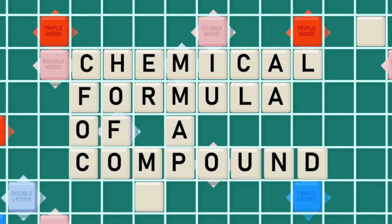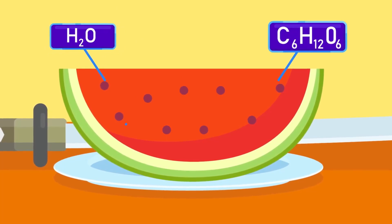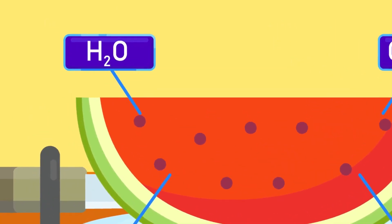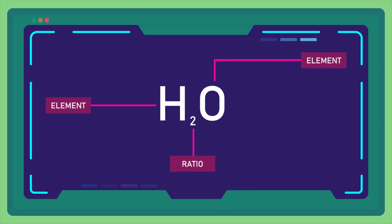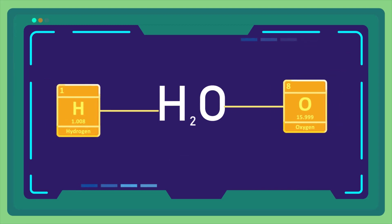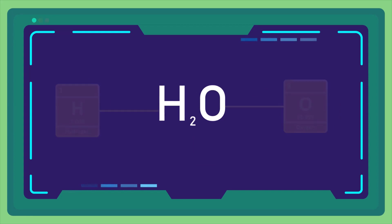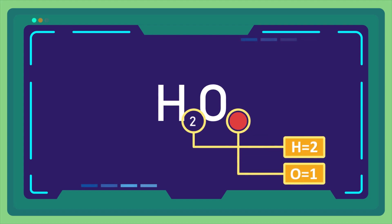Chemical formula of a compound. A chemical formula tells us the types of elements present in a compound and the ratio of different atoms present in a compound. For example, H2O: the H and O tell us the kinds of elements present, and 2 tells us that there are two hydrogen atoms. Oxygen has nothing written with it, which means that only one oxygen atom is present.